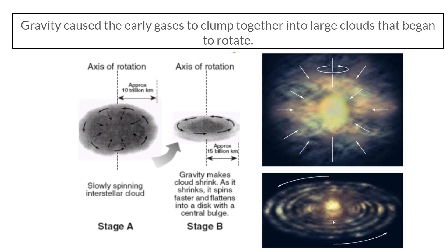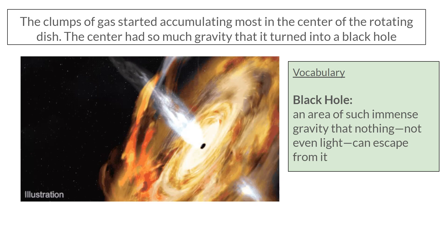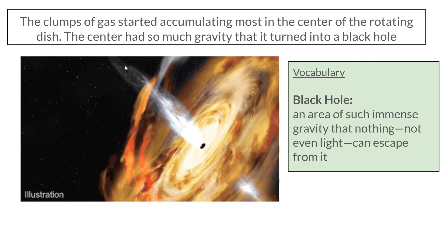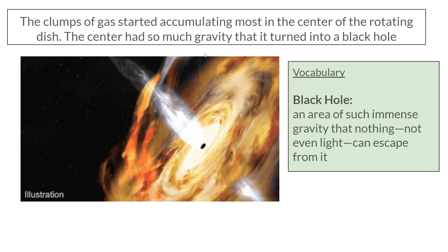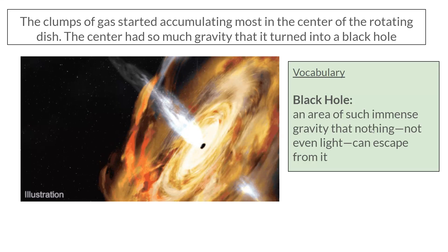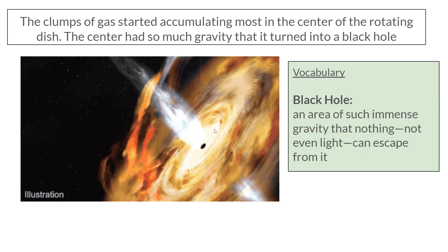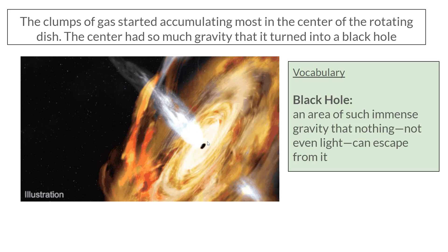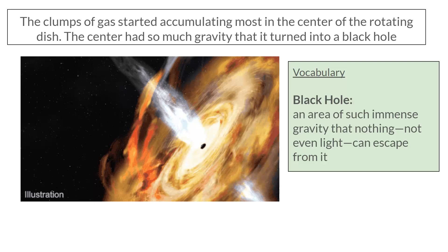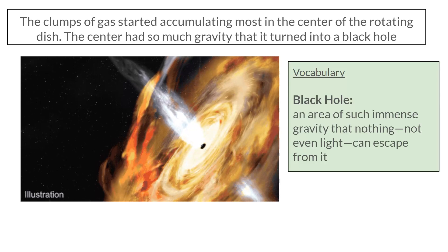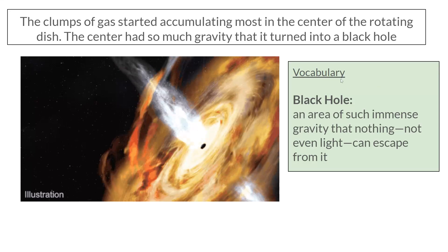This cloud of gas started to rotate or spin. The clumps of gas started accumulating most in the center of the rotating disk. The center had so much gravity that it turned into a black hole. A black hole is an area of such immense gravity that nothing — not even light — can escape from it. The mass kept accumulating mostly in the center, and since the more mass you have the more gravity you have, this part had such an immense gravitational pull that it turned into a black hole.